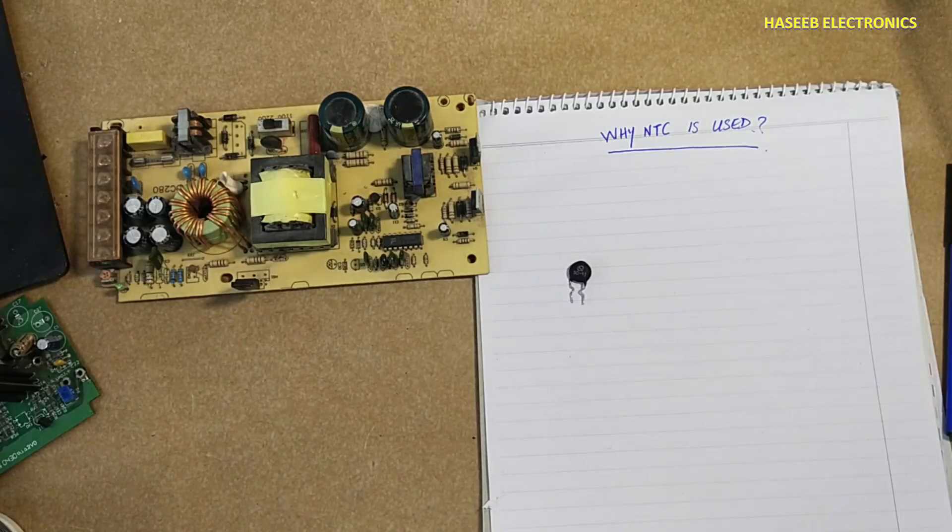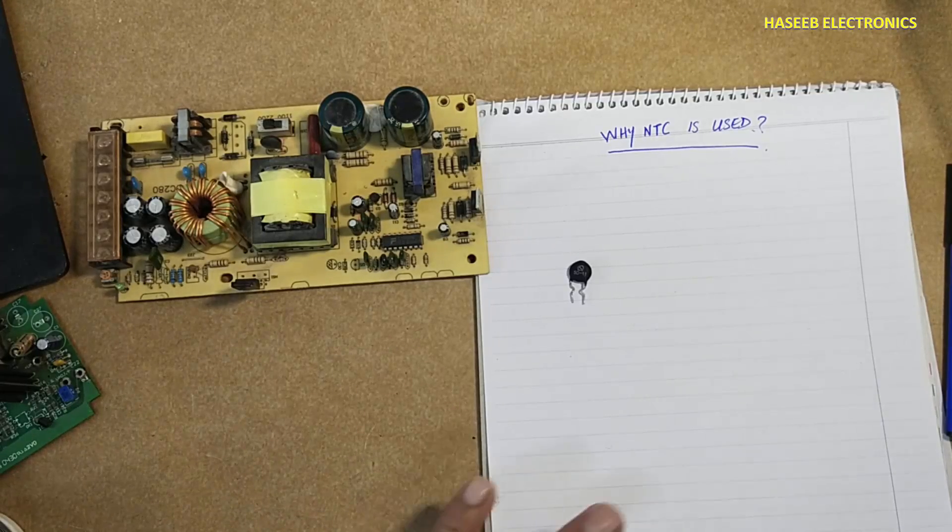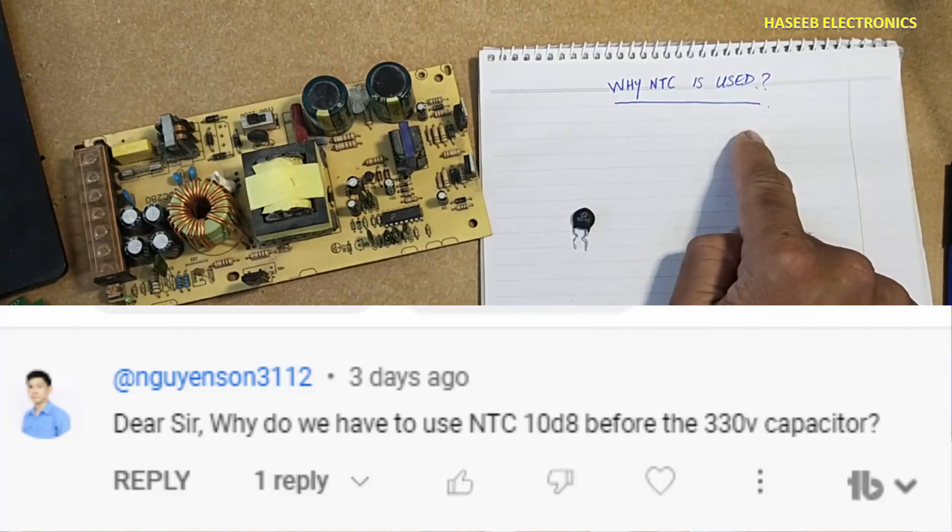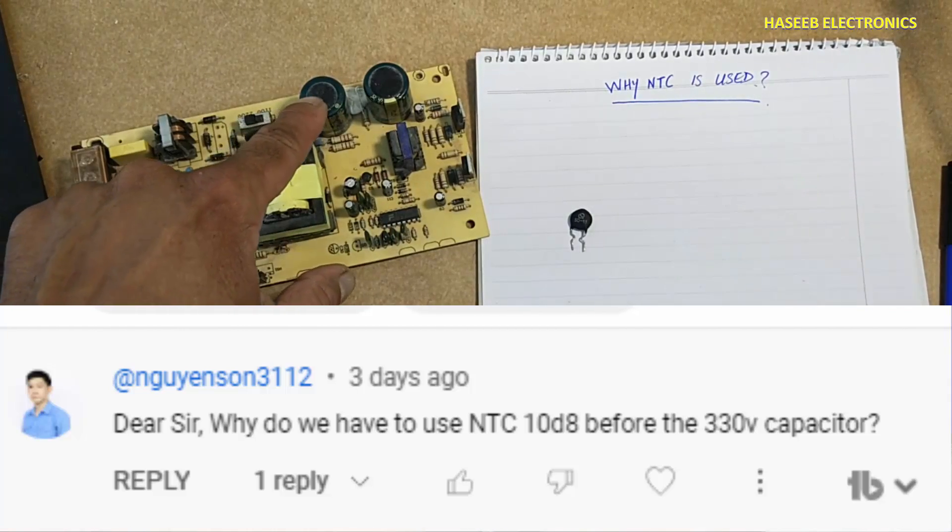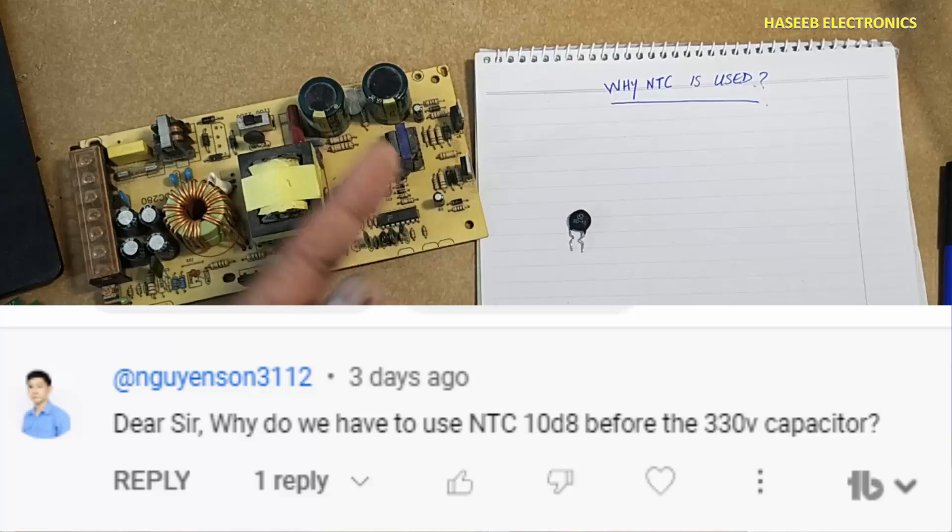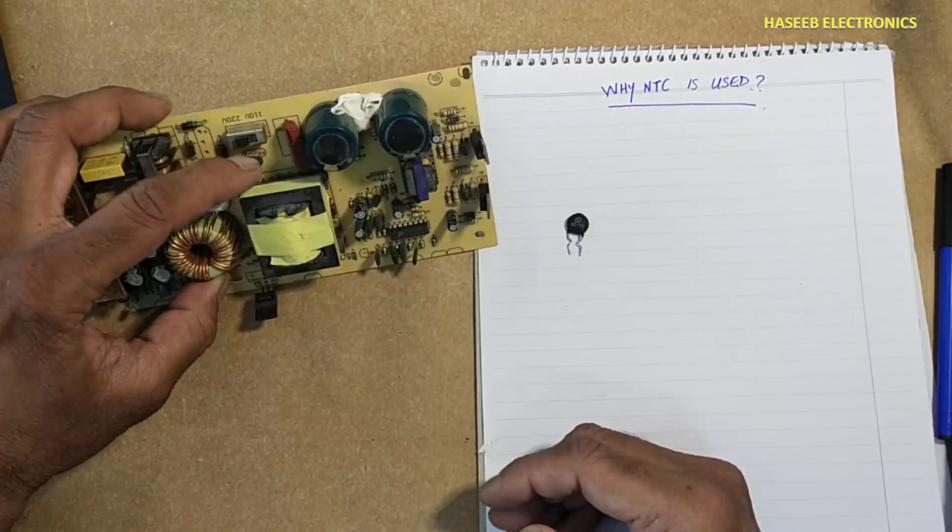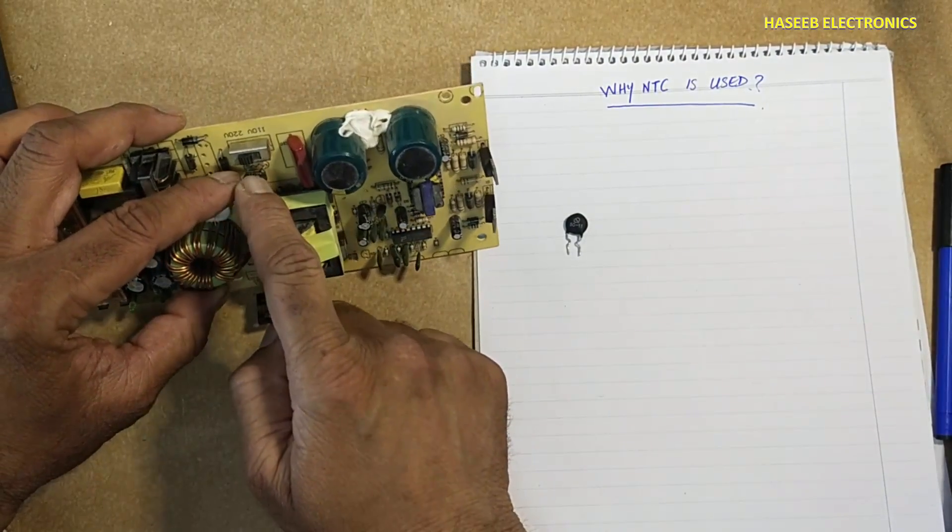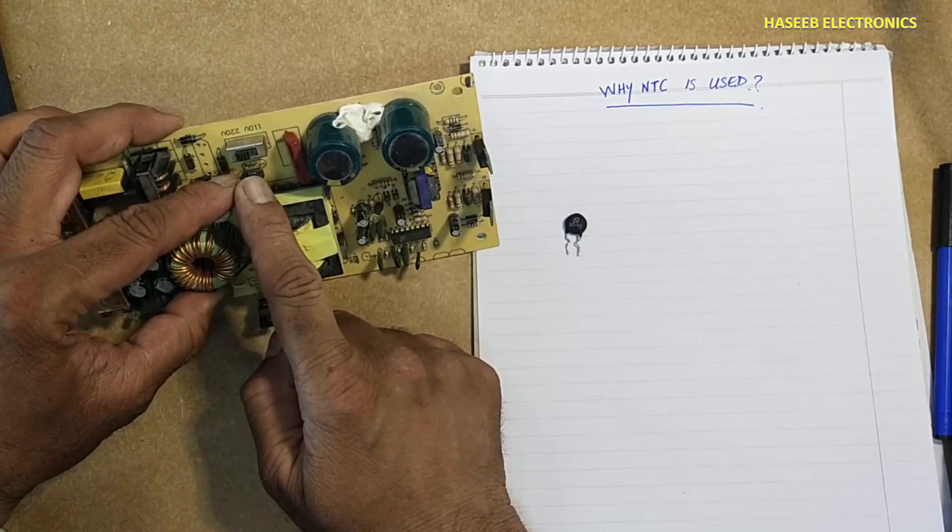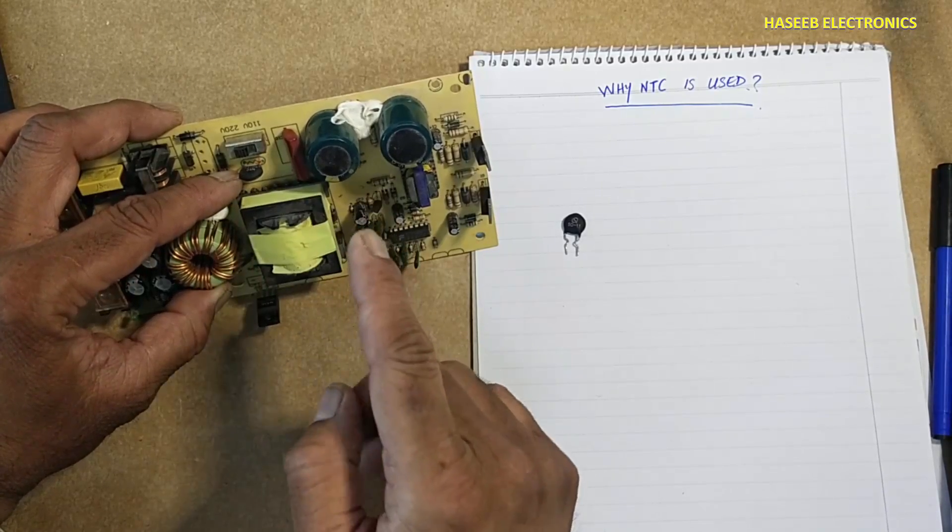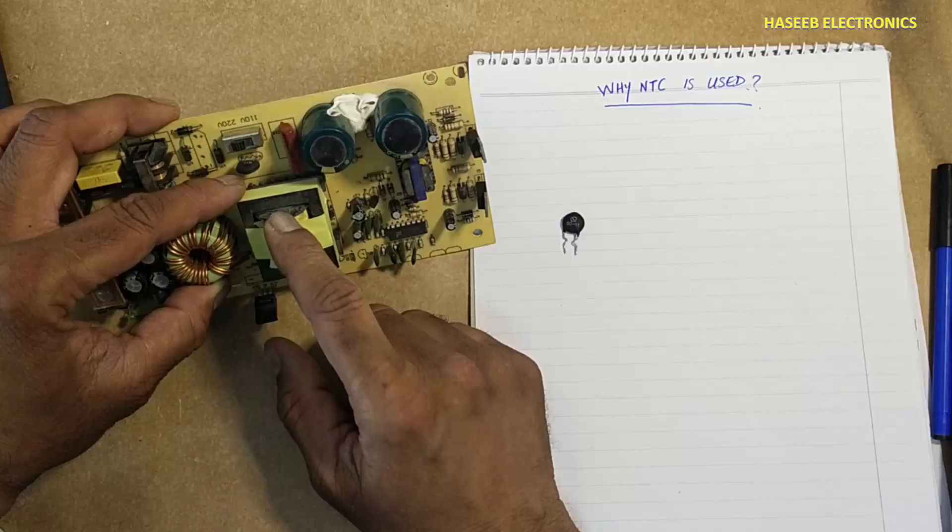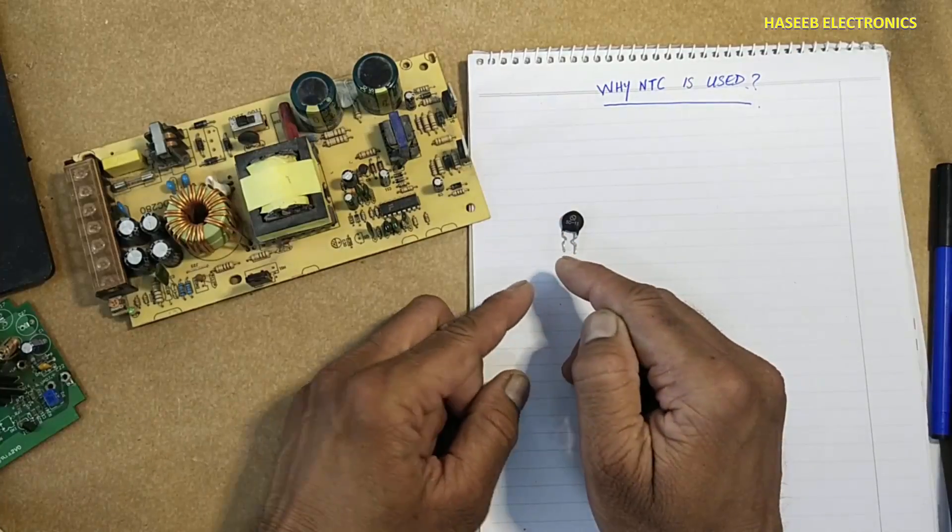Assalamu alaykum wa rahmatullahi wa barakatuhu friends, welcome back to my channel. Why is NTC used before this capacitor? This is a question from my view. Why this NTC, negative temperature coefficient resistor or thermistor? What is a thermistor? Its value will change with change in temperature.